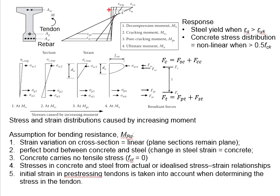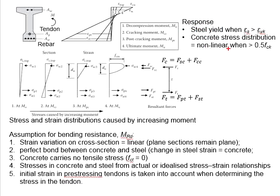It is noted that the strain in the steel increases as the moment increases. When the strain in the steel is greater than its characteristic yield strength, we know that the steel has yielded. The concrete stress distribution is considered nonlinear when it is greater than 0.5 fck.